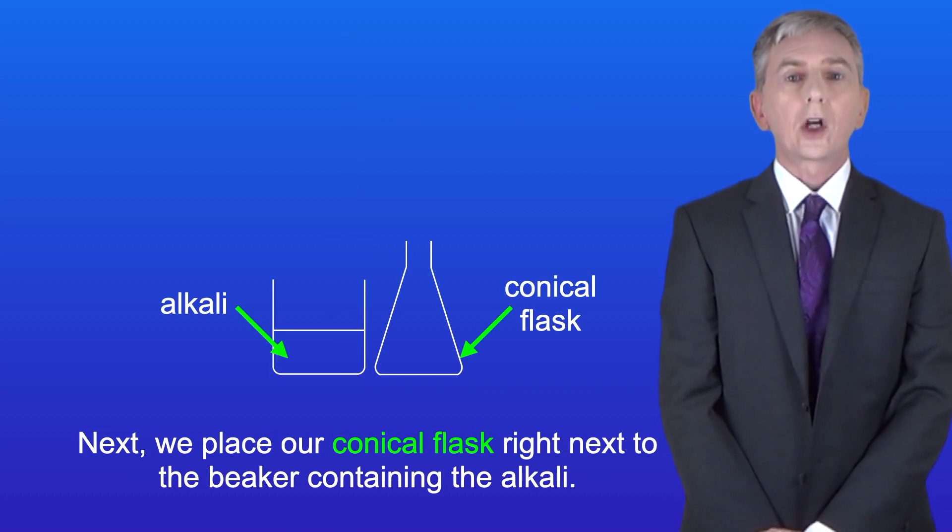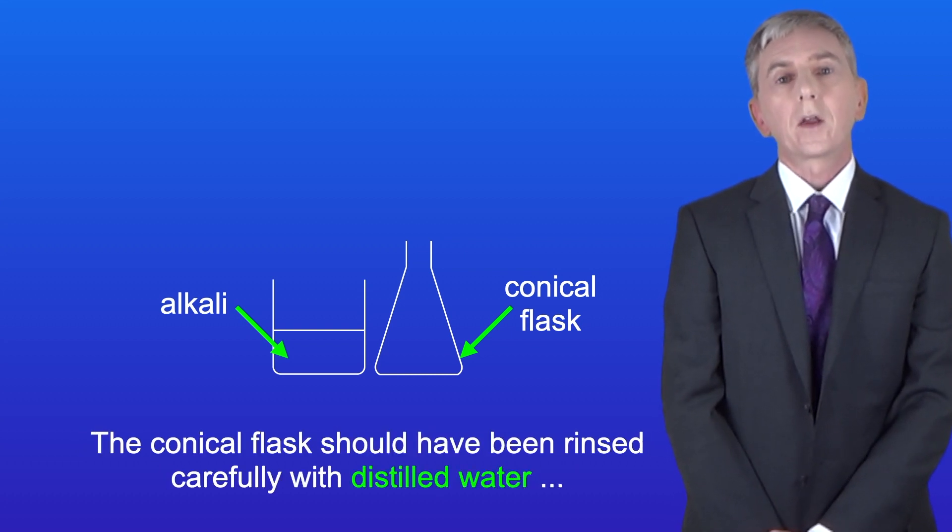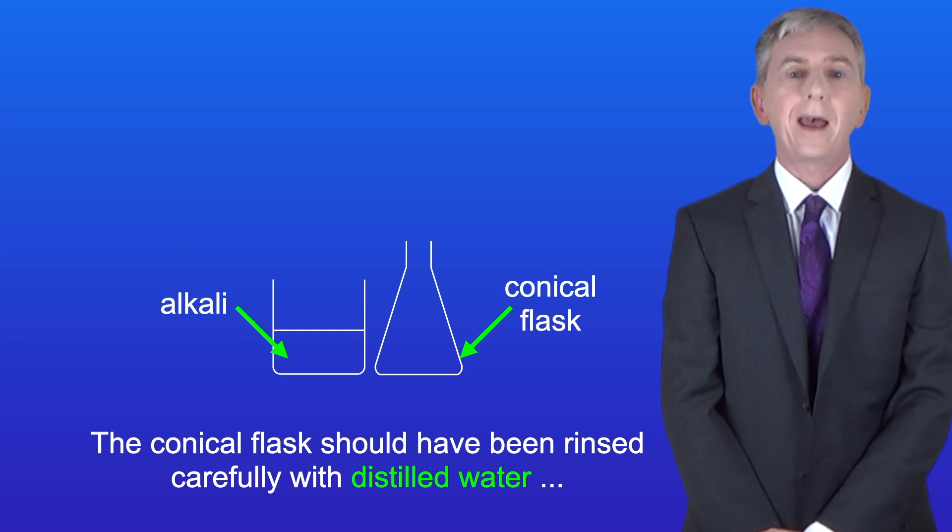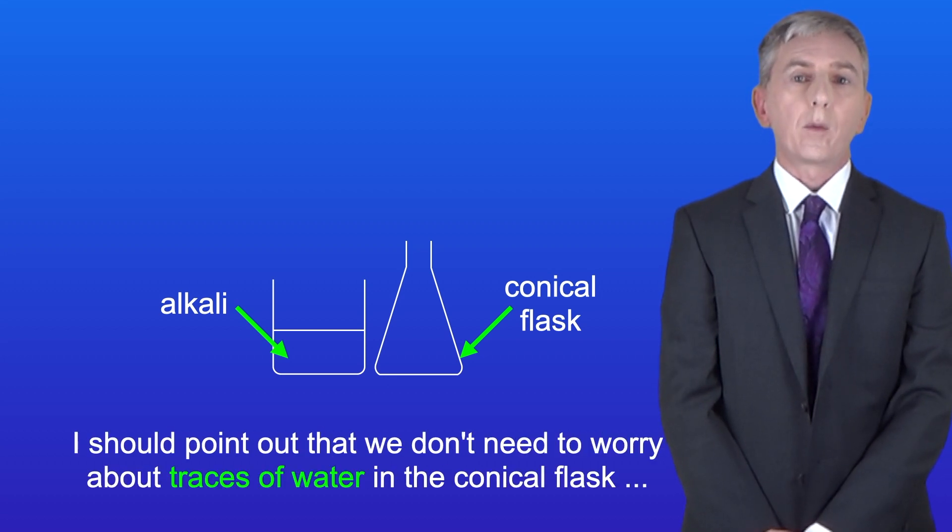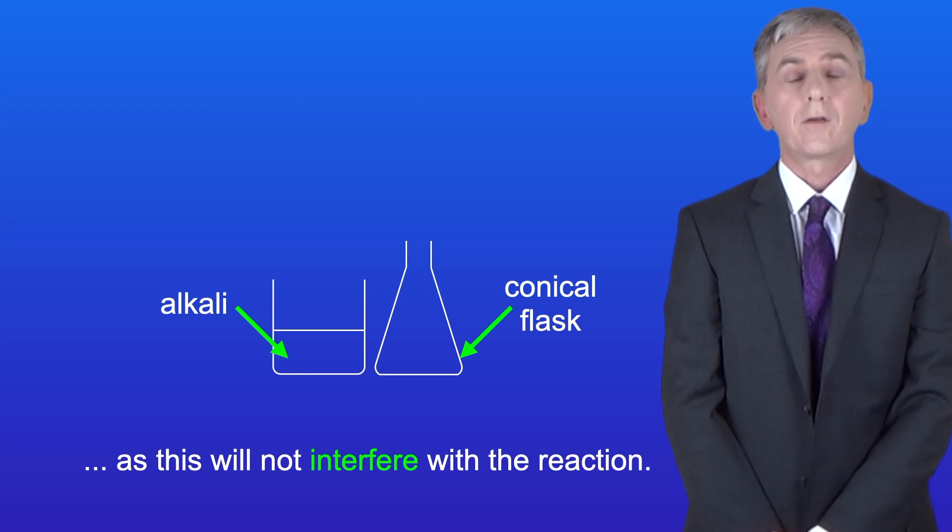Next we place our conical flask right next to the beaker containing the alkali. The conical flask should have been rinsed carefully with distilled water to remove any traces of unwanted chemicals. I should point out that we don't need to worry about traces of water in the flask as this will not interfere with the reaction.